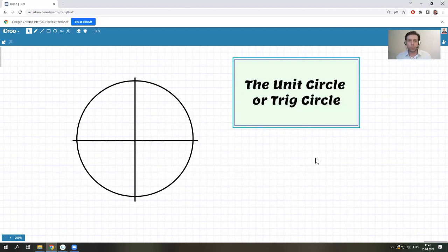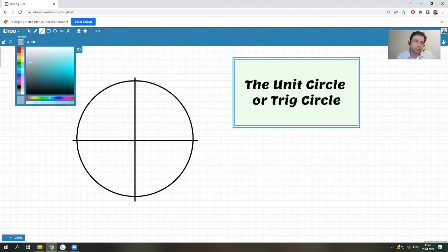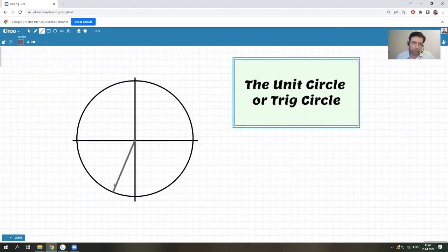So first of all, why is it unit? Because the radius is one unit exactly. Let me draw it, one unit radius. From here we have one unit radius, radius is equal to one.